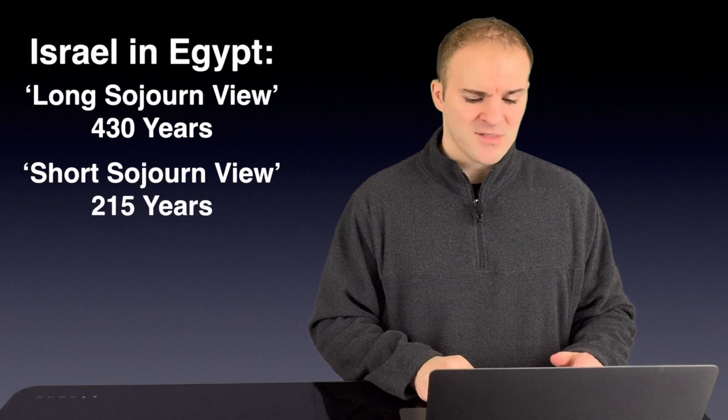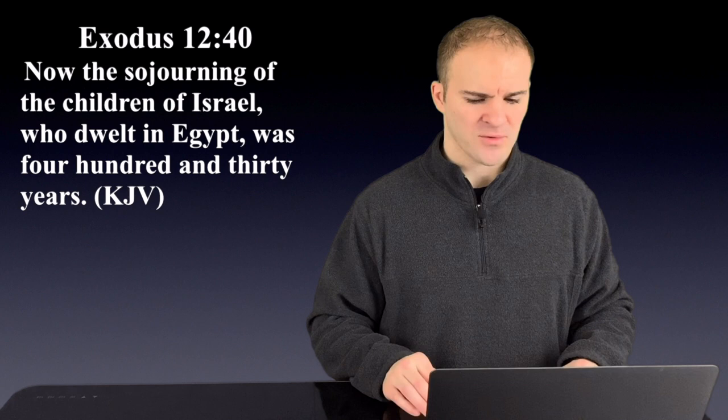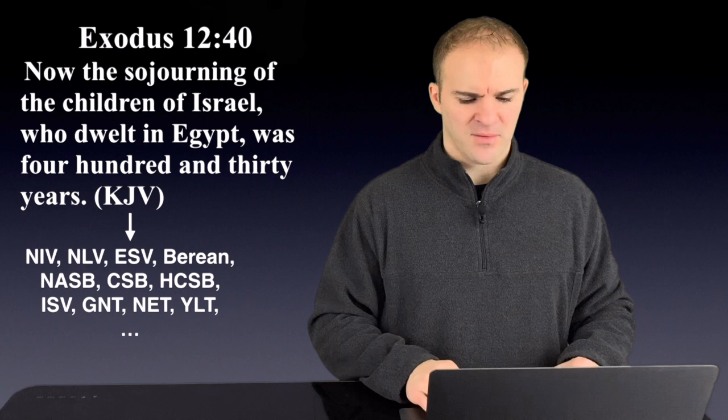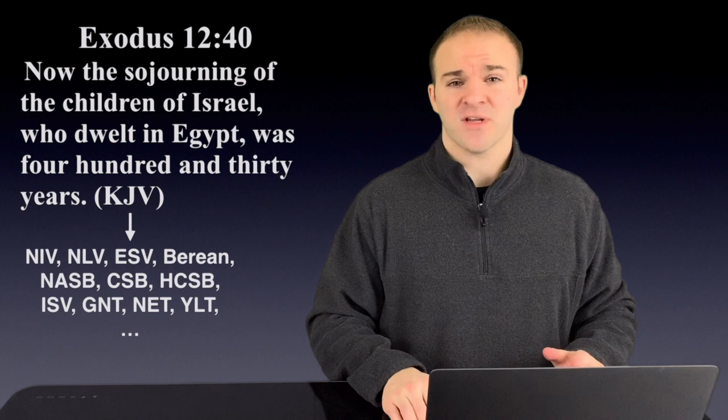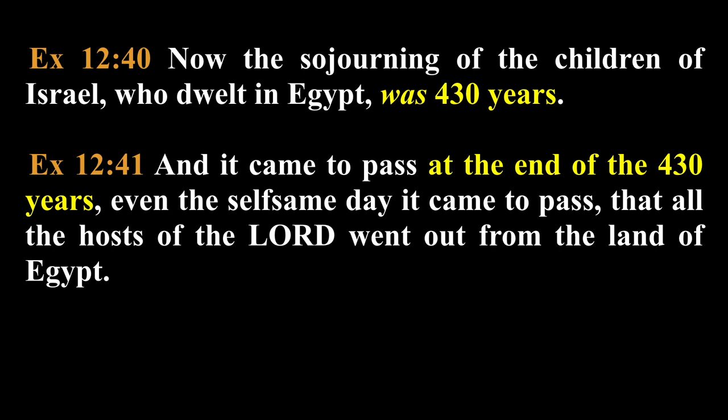So let's see how all these cases are promoted and which one actually holds to the biblical text. Exodus 12:40: Now the sojourning of the children of Israel who dwelt in Egypt was 430 years. And if you were to look up every modern translation, you would see that they say exactly the same thing. And verse 41 doubles down on this saying, and it came to pass at the end of the 430 years, even the selfsame day it came to pass, that all the hosts of the Lord went out from the land of Egypt. So you can see that in both verses 40 and 41, that the 430 years is connected with Egypt.